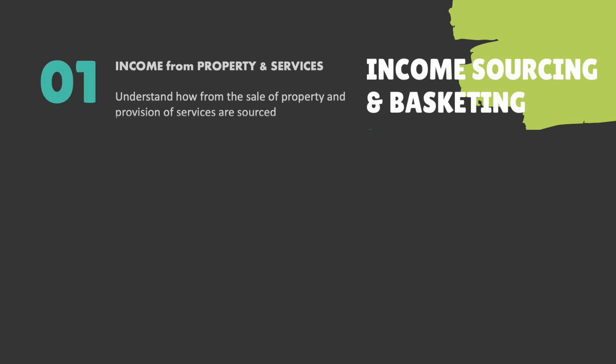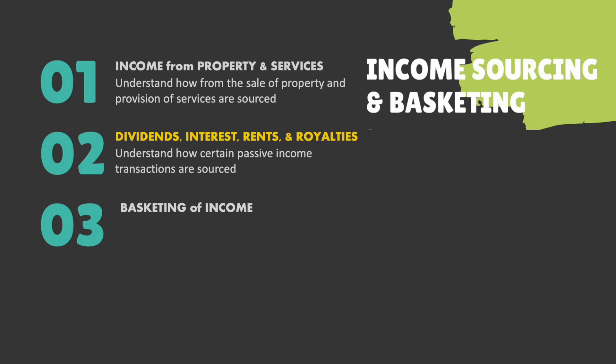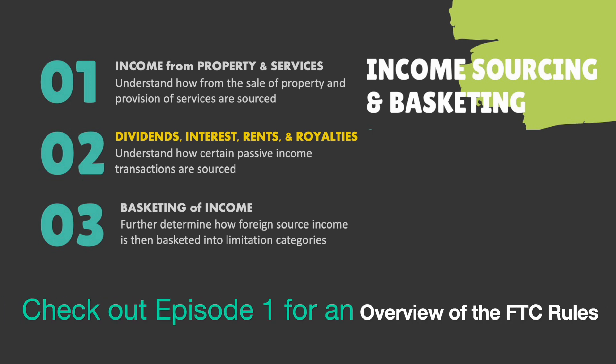So far we've talked about how income is sourced. What I'll talk about in the next video is how we take our income that we've sourced as U.S. or foreign, look to the foreign items, and actually basket them. When doing the foreign tax credit calculation — going back to the high-level summary from video one — we have to determine a limitation computation looking at what basket each item of income falls into. We'll take our foreign source items and further put them into baskets like general limitation income, passive income, and GILTI.